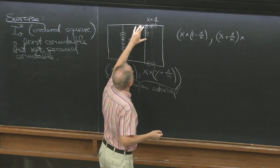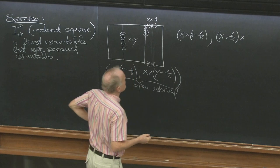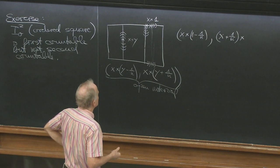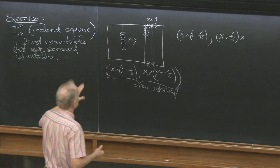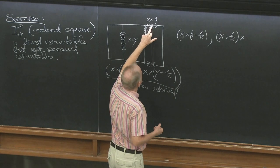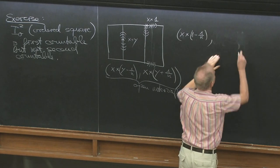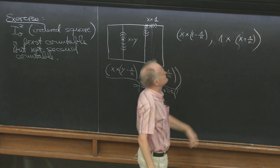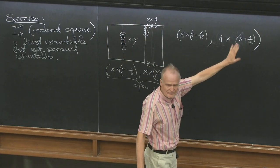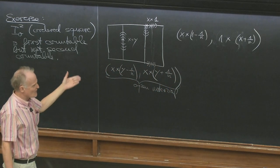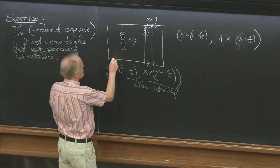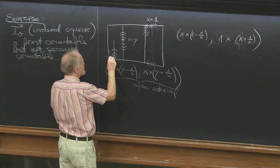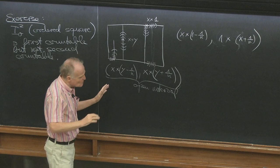So let's take it here — it's nicer to make a picture. These are the points x plus 1/n, and the second coordinate is always 1, on this line. So this is first countable. And we have these points here, similar cases. So it's first countable.